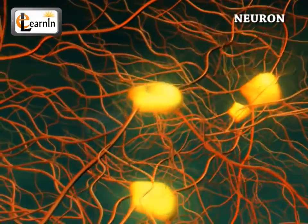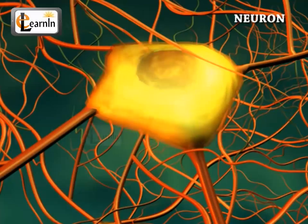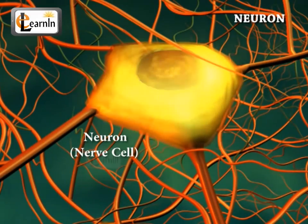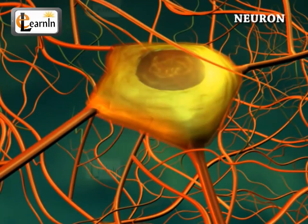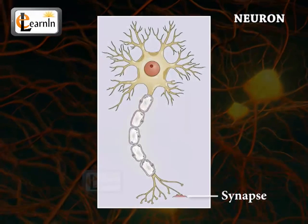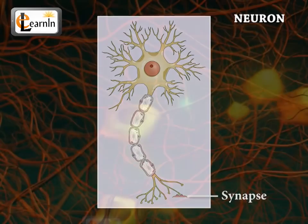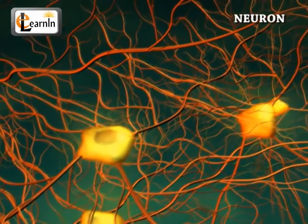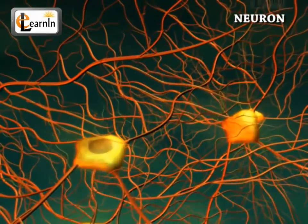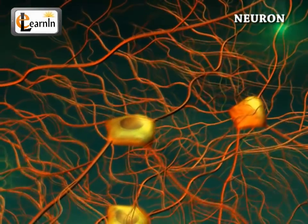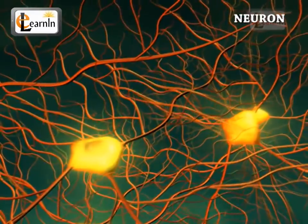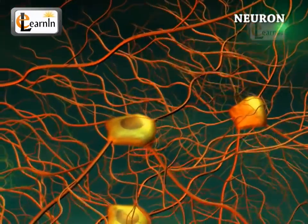At the cellular level, the nervous system consists of a special type of cell called the neuron, also known as the nerve cell. The neurons connect to each other using a synapse, which is a structure that acts like a pathway connection that transmits signals to other cells to form the nervous system. Neurons have special structures that allow them to send signals rapidly and precisely to other cells by providing a common pathway for the passage of these electrochemical nerve impulses.